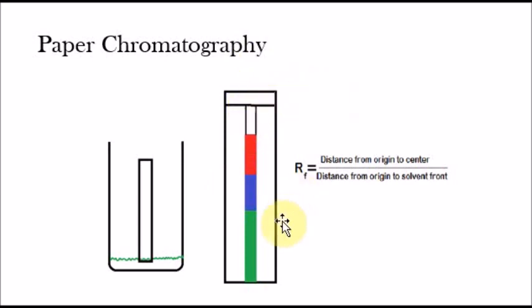And typically your solvent is going to be water. So these three liquids would separate out and then the water would keep just going up and up until that would stop. So you take the distance from the origin to the center and divide it by the distance from the origin to the solvent front, which is all the way up here. And that will give you what's called a retention factor. So the higher the retention factor, the more chemically similar the substance is to the paper. And the lower the retention factor, the less the substance is like the paper.